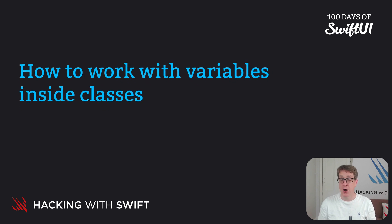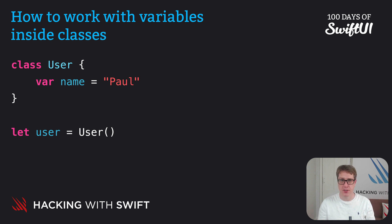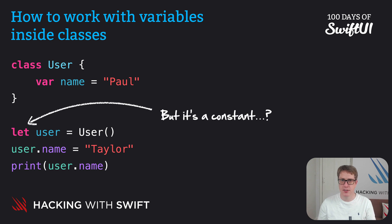This one simple code example shows how things work. We have a class User with a variable property called name equal to Paul. Then we make a user: let user equals User. Once that's done we'll say user.name equals Taylor and print user.name. And that code's fine — but we're changing the constant. We shouldn't change constants.